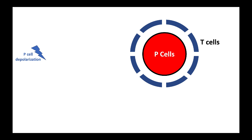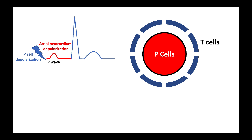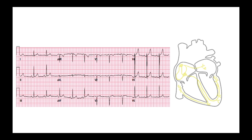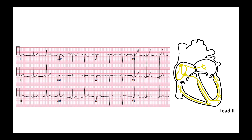When P cells depolarize, the impulse wave reaches the atrial muscle causing atrial depolarization, which is recorded on the surface EKG as a P wave. It's important to understand that the P wave represents atrial depolarization and not sinus node depolarization. The only way to measure the interval between sinus depolarization and atrial depolarization is with an electrode within the sinus node itself, by means of invasive electrophysiological studies. However, the P wave can be used as a surrogate to determine that atrial depolarization occurred secondary to sinus depolarization, using the P wave shape and direction in specific leads.